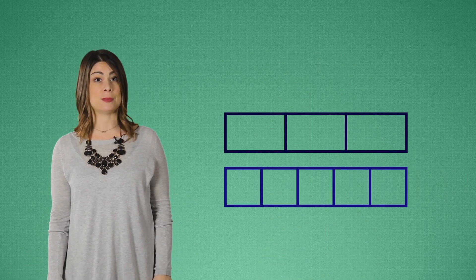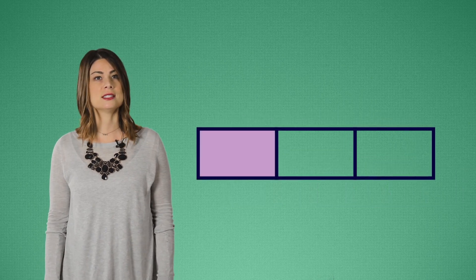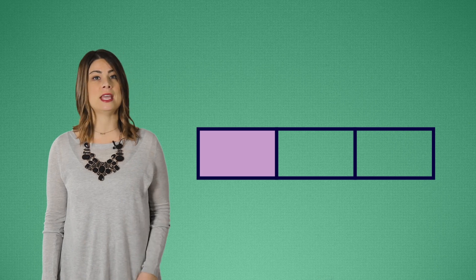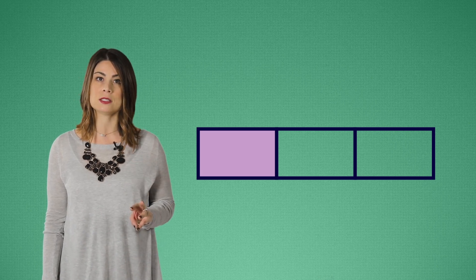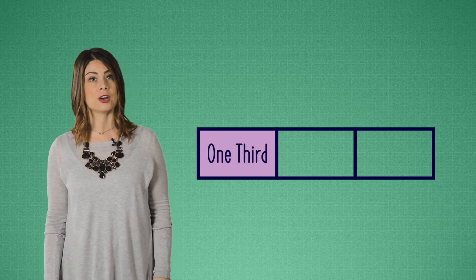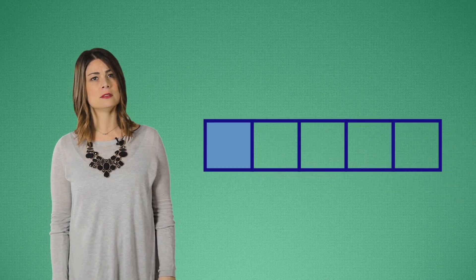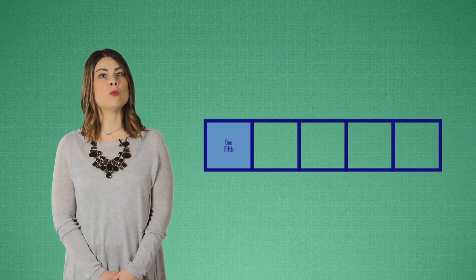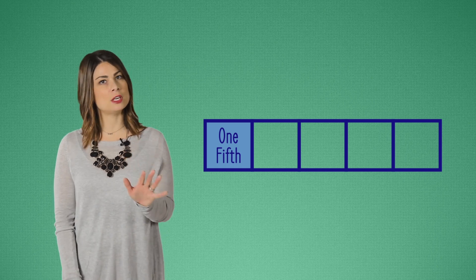Here are some fraction strips I made. What fraction does this strip represent? This fraction strip is made of three equal pieces. So this is one third. How about this one? This fraction strip is one fifth. It has five equal parts.